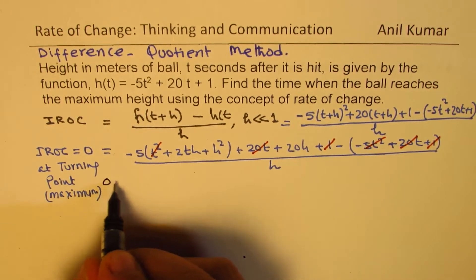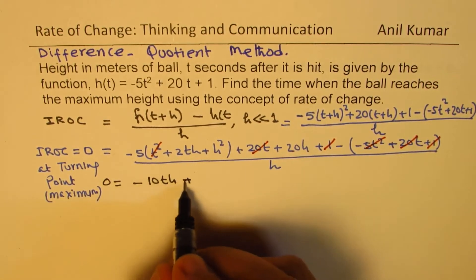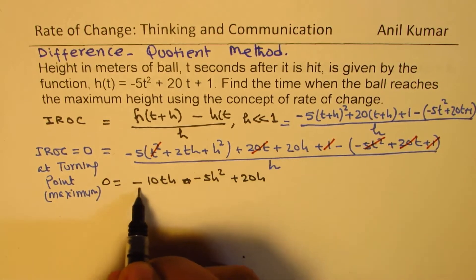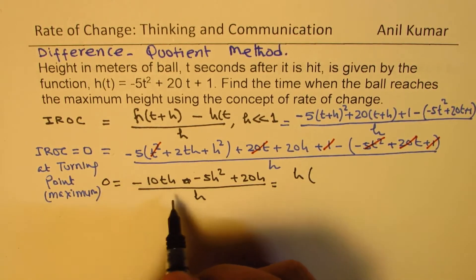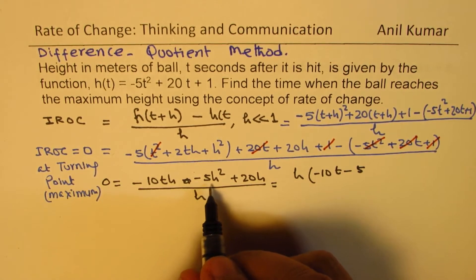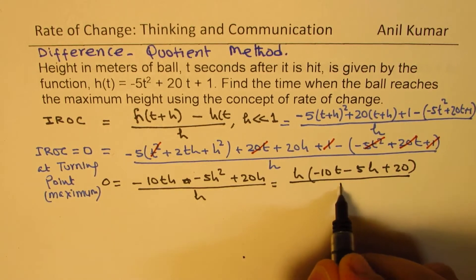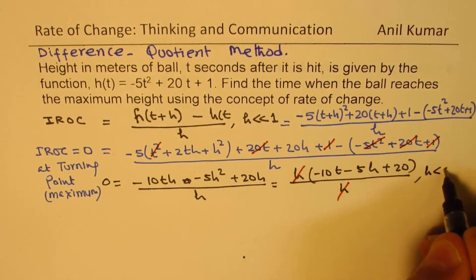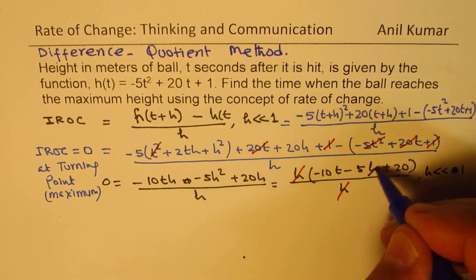Setting the expression equal to zero, we open the bracket and get: minus 10th minus 5h squared plus 20h, all divided by h. We can factor out h, giving minus 10t minus 5h plus 20, over h, and the h's cancel. Since h is very very small and approaches zero, the term minus 5h also approaches zero. So we are left with: 0 equals minus 10t plus 20.